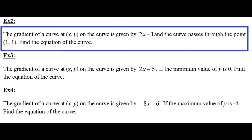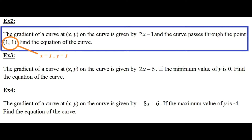In example 2, the gradient of a curve at x, y on the curve is given by 2x minus 1. This implies dy over dx is 2x minus 1. The curve passes through the point (1, 1), so x equals 1 and y equals 1. Find the equation of the curve — that means calculate y in terms of x.